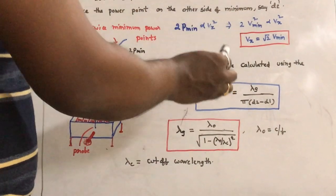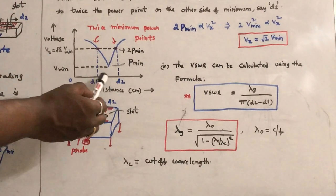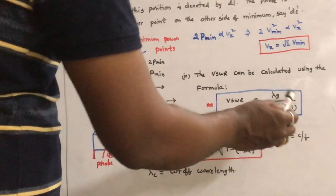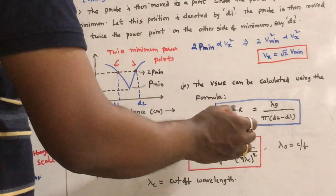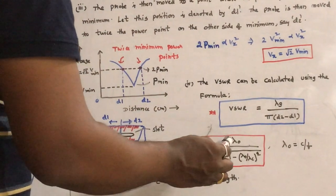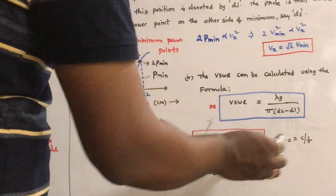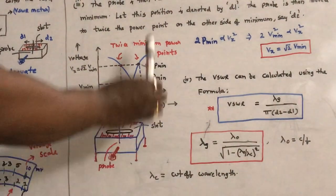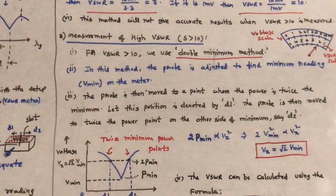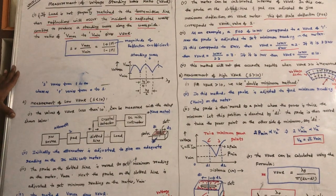The VSWR can be calculated using the formula: VSWR = λg / (π × (D2 − D1)), where D1 and D2 are readings on the slotted line scale. Lambda G is the guide wavelength, given by λg = λ0 / √(1 − (λ0/λc)²), where λ0 = c/f and λc is the cutoff wavelength. This is how VSWR values greater than 10 are measured using the double minimum method. In the examination, write both methods: VSWR < 10 and VSWR > 10.